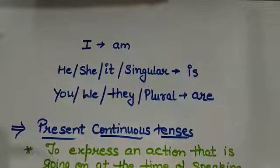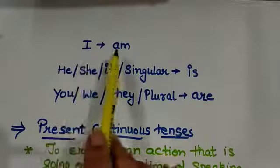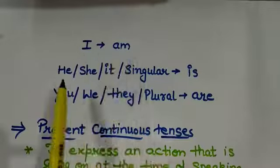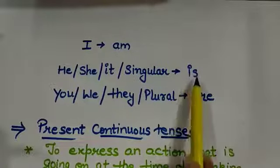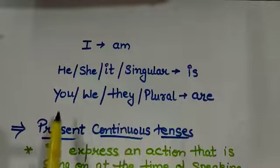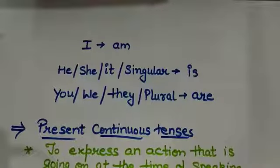On is/am/are, we also have a video. If you want to understand the basic concept of is/am/are, you can watch that. But for now, just understand that if the subject is I, use am with it. If the subject is he, she, it or any singular noun or pronoun, use is. And if the subjects are you, we, they and any plural, use are with them.